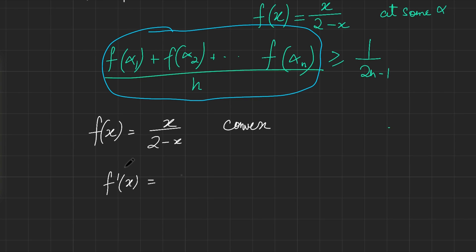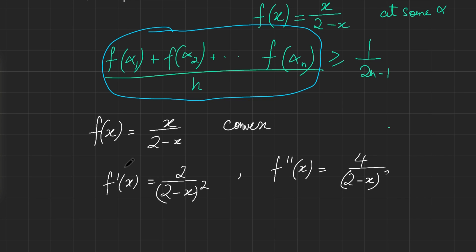Taking derivatives: f'(x) = 2/(2 − x)², and then f''(x) = 4/(2 − x)³. Now, what is the sign of f''(x)? If x is less than 2, it's positive, but if x is greater than 2, it's negative — which would be a problem.